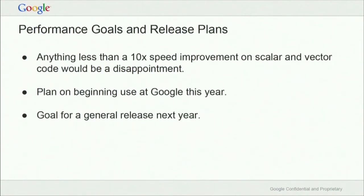Where we'd like to get to is at least 10 times faster, and we believe this is completely obtainable based on what we've seen to date — it's just a matter of doing the engineering work. We're hoping to start using this internally at Google this year. There's work to be done on compatibility and making sure there are no bugs, but that makes a great testing ground. Being internal to a single company, there's a lot less platform variation and it's much easier to debug. Then if that goes well, hopefully we'll be looking at a general release sometime next year.